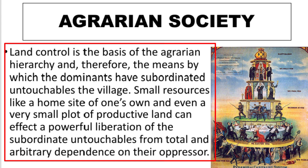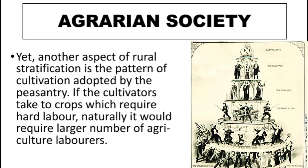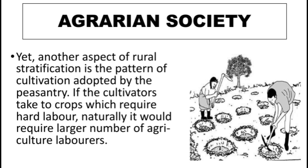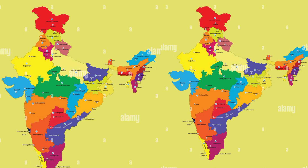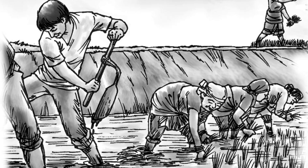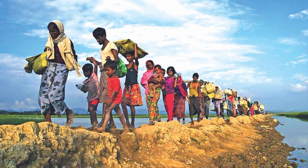Yet another aspect of social stratification is the cultivation pattern adopted. For example, if cultivators want to cultivate crops that require hard and more labor, it depends on the cultivation pattern. In many states of India like Punjab and Bihar, paddy is grown extensively, so a large number of laborers are needed. Landless laborers come from Bihar to Punjab for the cultivation of paddy — this is the tenant system.